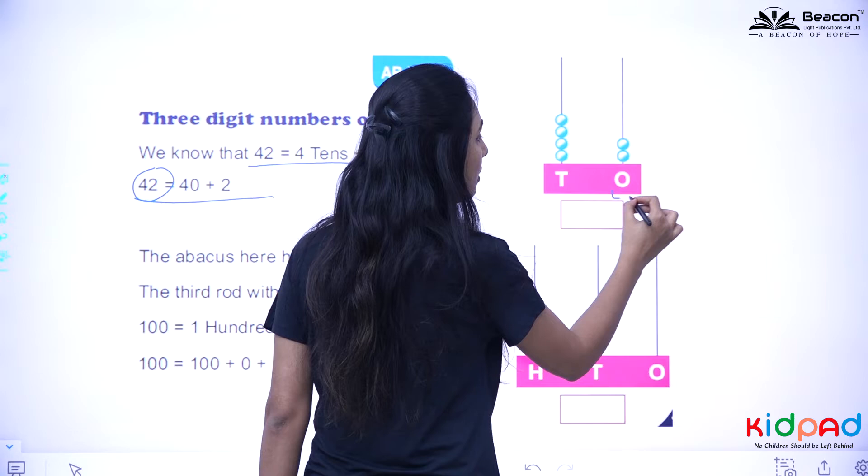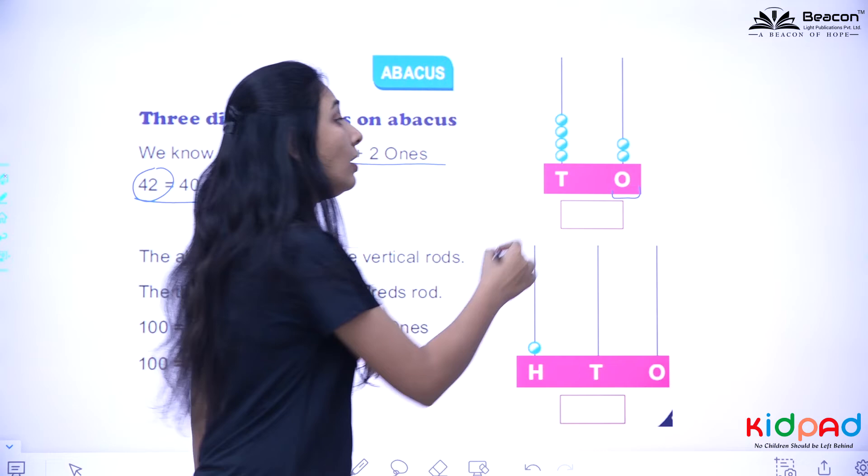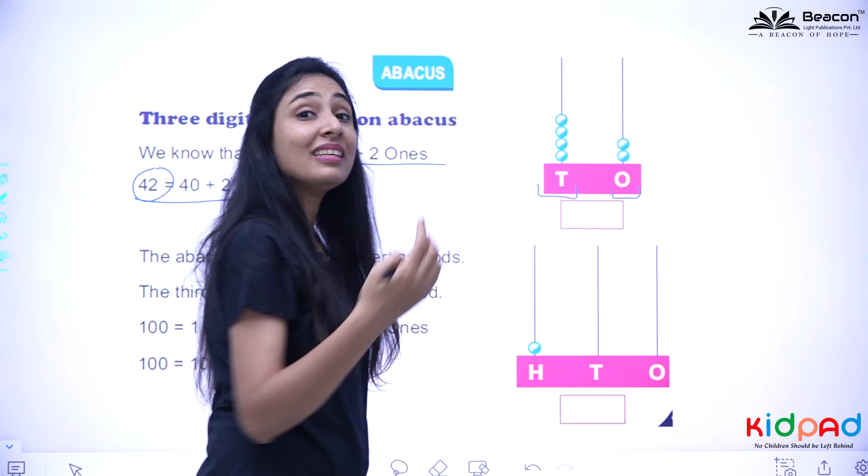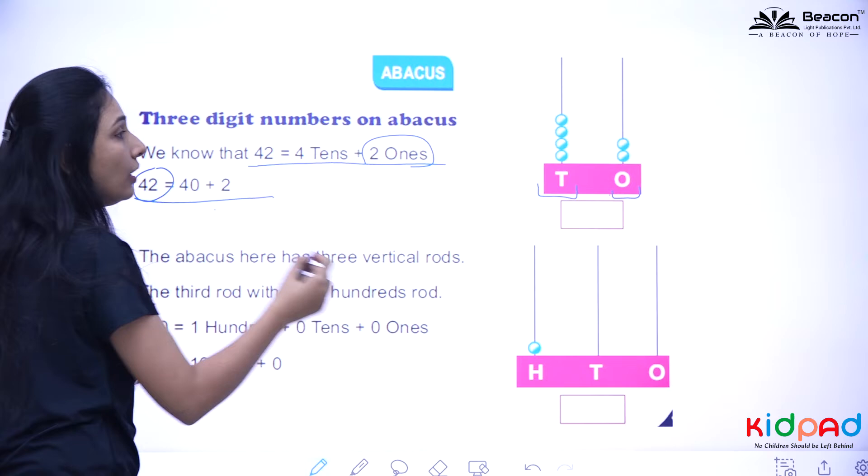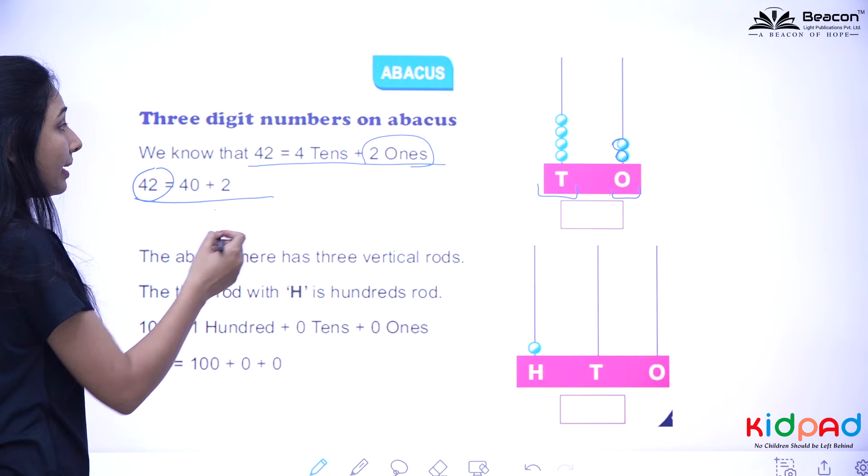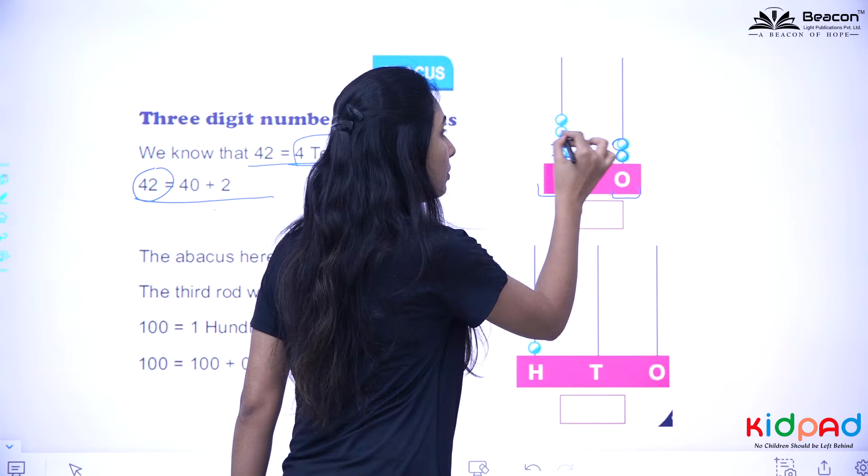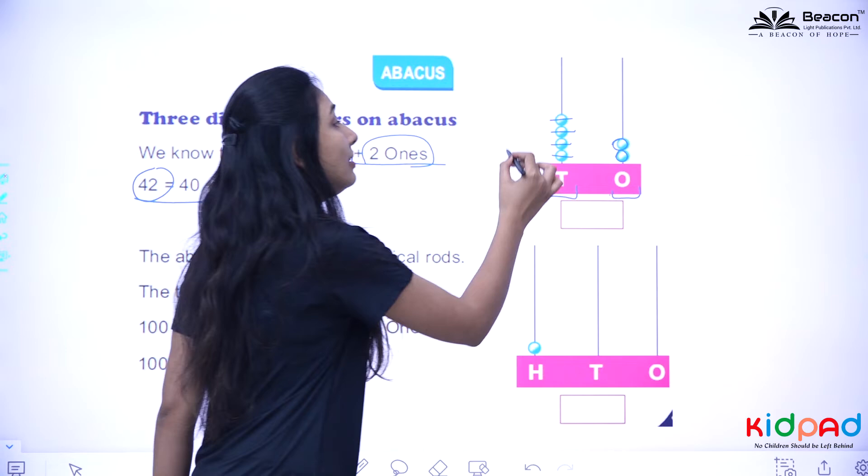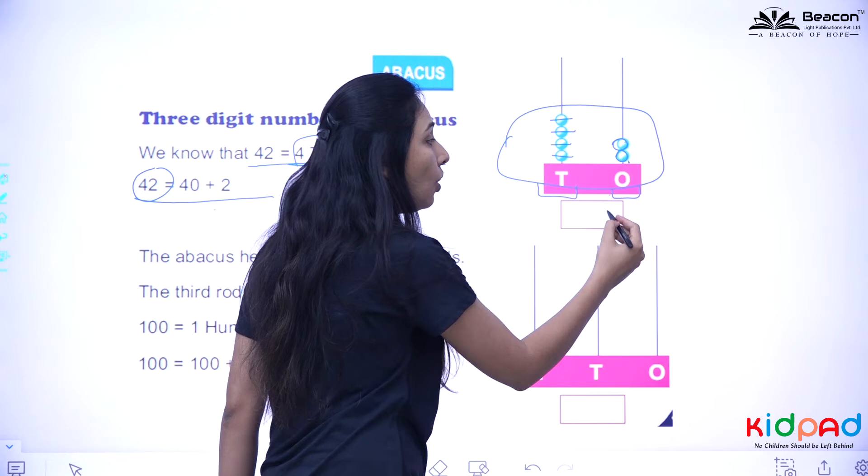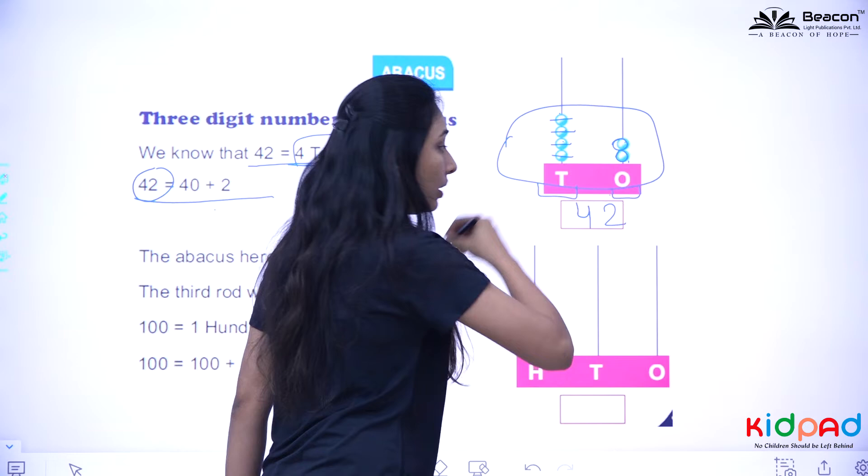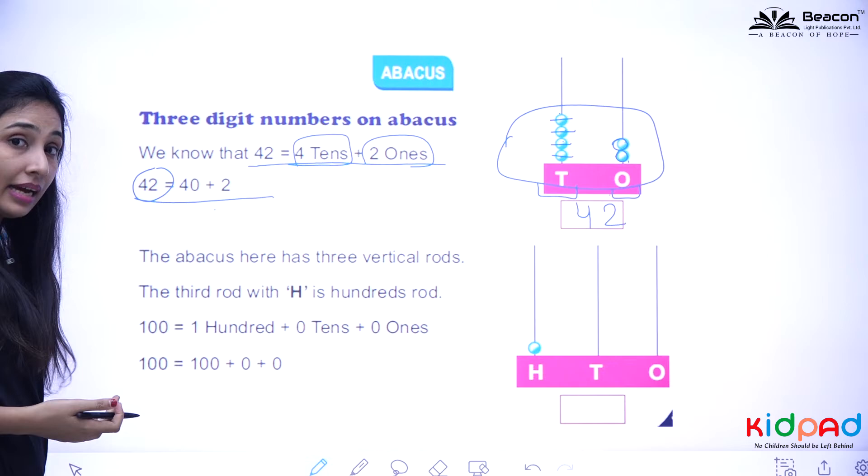How do we show this in abacus? We are having this first column in which we have ones place, and the second column is called tens place. In the ones place, how many beats are there? Two, why? Because we are having two ones here. So we are having two beats here. Now in the second one, we are having tens as four. So we are having one, two, three, four beats in the second column. Get it? So this is how we represent it in abacus. We count this one, two, and write it in the ones place. Count here one, two, three, four, and write it in the tens place. That is 42.